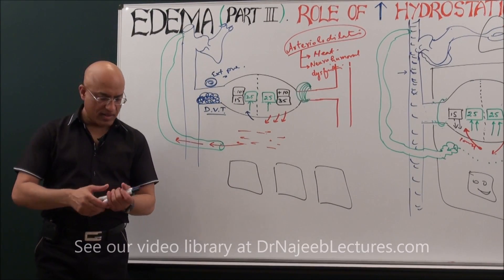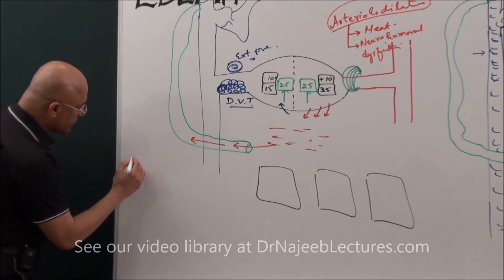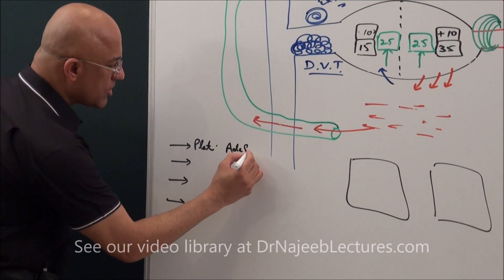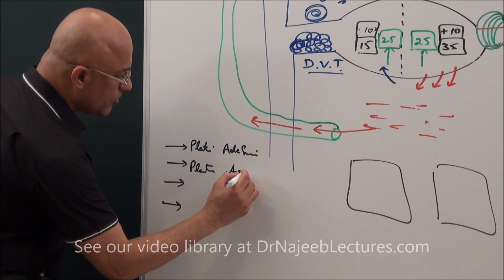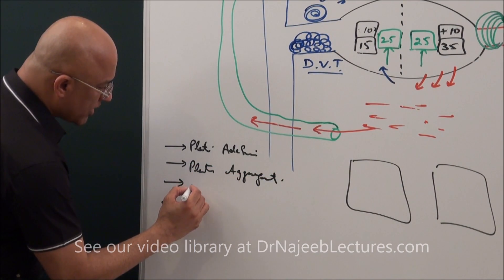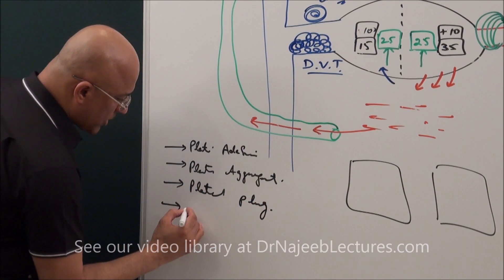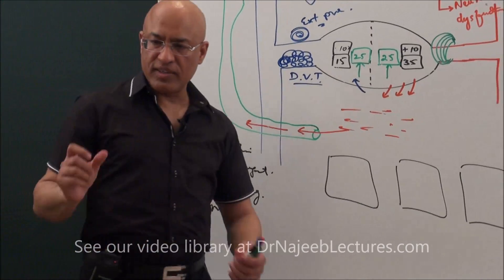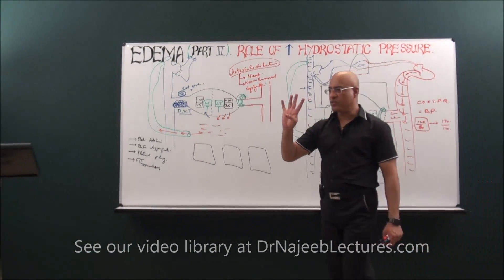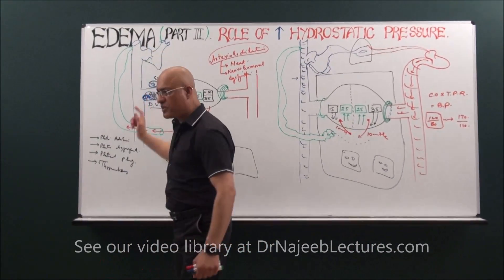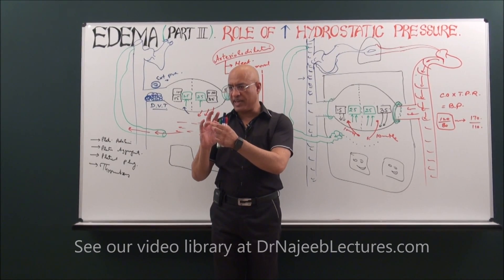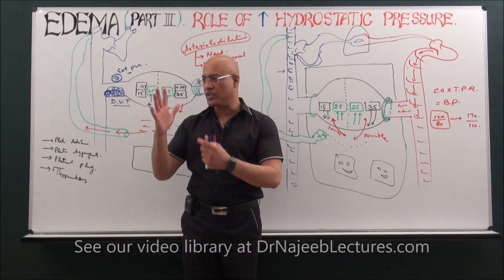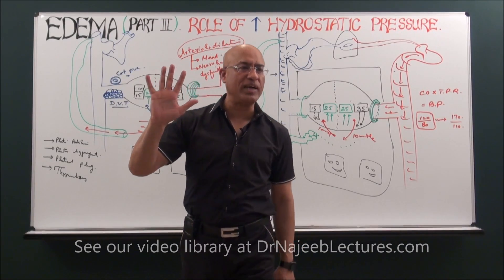What is the difference between these terms? I want you to be clear on five: what is platelet adhesion, what is platelet aggregation, what is primary platelet plug, what is thrombus, and what is coagulation? Someone should be able to differentiate these five terms.